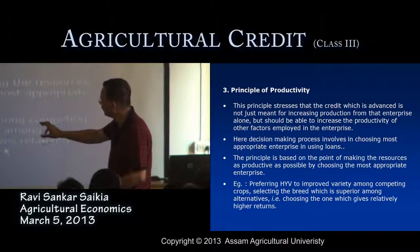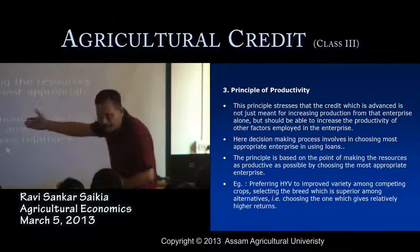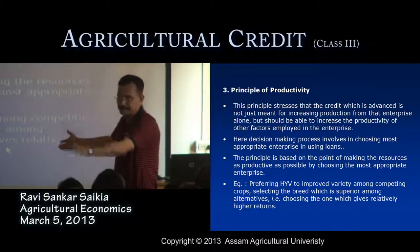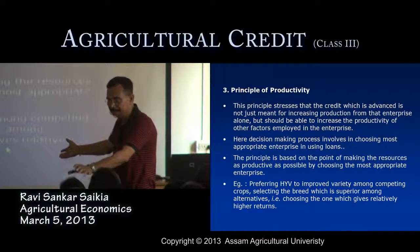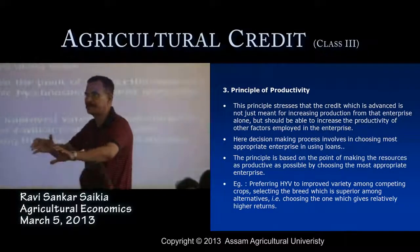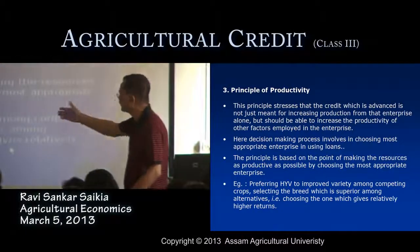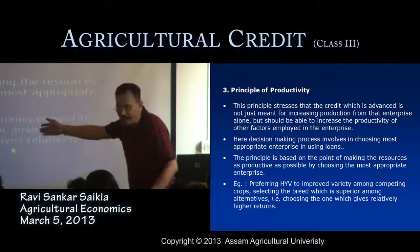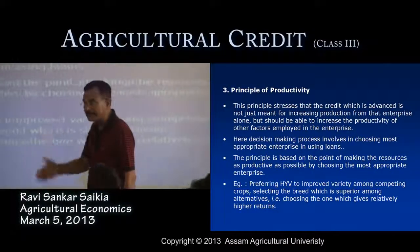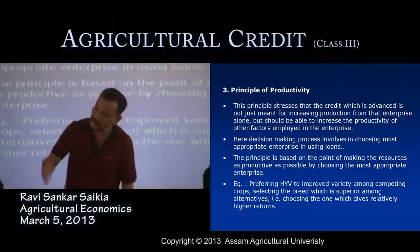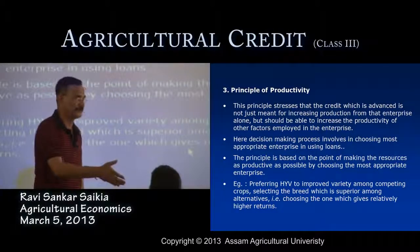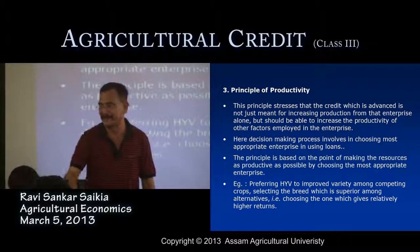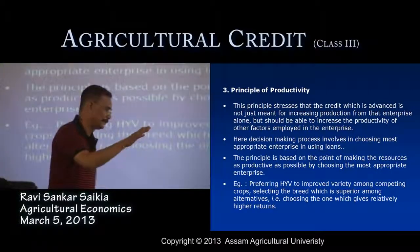For example, preparing a farm plan to improve variety among competitive crops — the selection of the crop — and selecting the breed superior among all alternatives available to the farmers, choosing the one which gives relatively higher returns. Banking organizations, before disbursing the loan, can also give guidelines to farmers in selecting better enterprises that give the highest return along with minimization of cost.